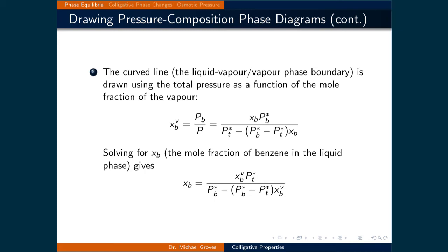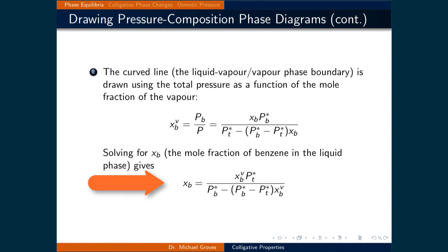The curved line, being the liquid-vapor to vapor phase boundary, is drawn using total pressure as a function of the mole fraction of benzene in the vapor. First we derive an expression linking the mole fraction of benzene in the liquid to that in the vapor using only constants. Using Dalton's law, the vapor mole fraction of benzene equals its partial pressure divided by total pressure. Applying Raoult's law and substituting the total pressure expression, and rearranging to solve for the liquid mole fraction of benzene gives: x_benzene(liquid) = y_benzene·P*_toluene / [P*_benzene − y_benzene·(P*_benzene − P*_toluene)].